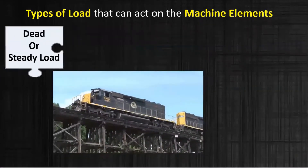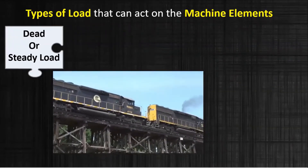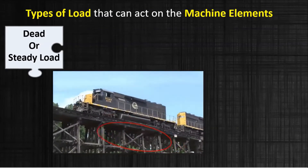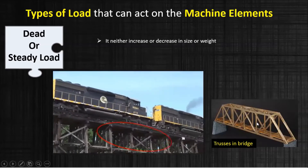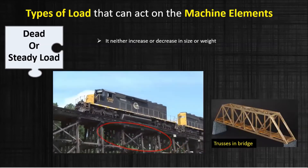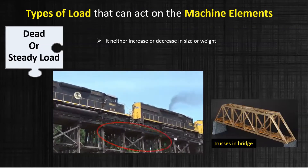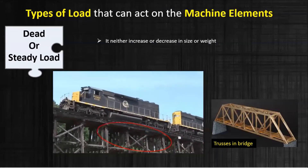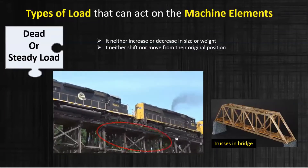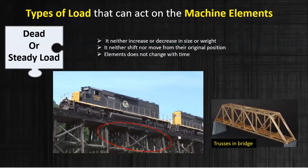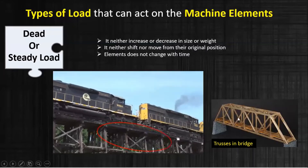Let's first understand what a steady load is. If you see this picture, a train is running over the bridge. Consider the trusses in the bridge as shown in the enlarged view. In this case, the bridge elements neither increase nor decrease in size, they remain as they are, they neither shift nor move from their original positions, and the elements do not change with time.